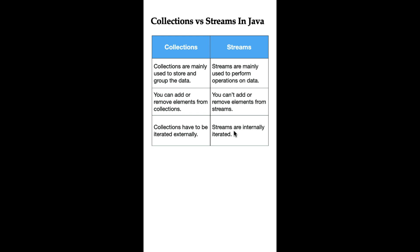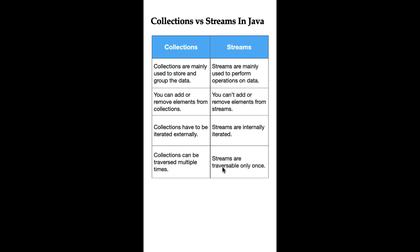Collections have to be iterated externally using a for loop or iterator, whereas Streams are internally iterated — they perform the iteration internally behind the scenes for us using the forEach method.